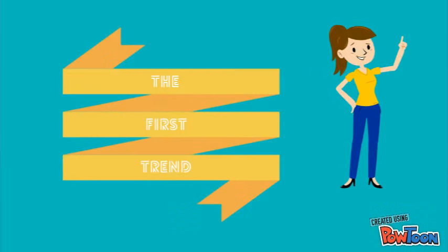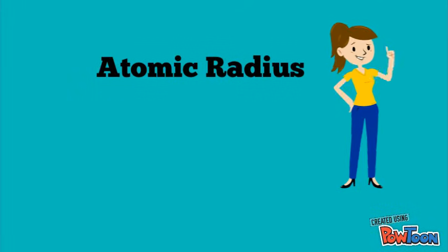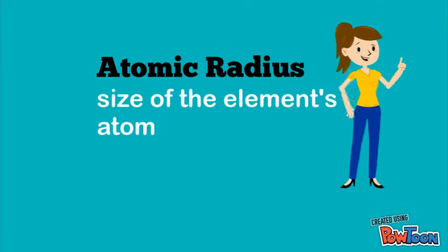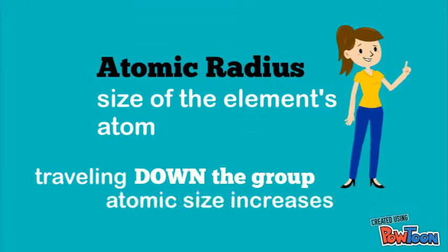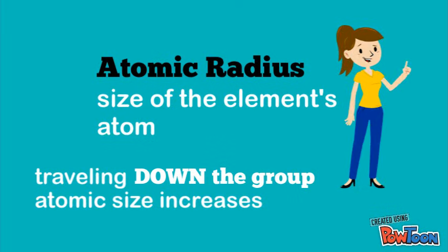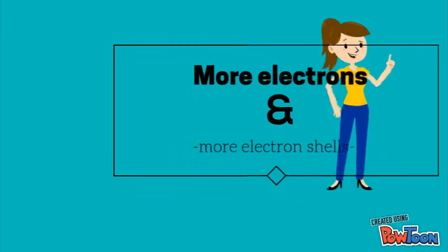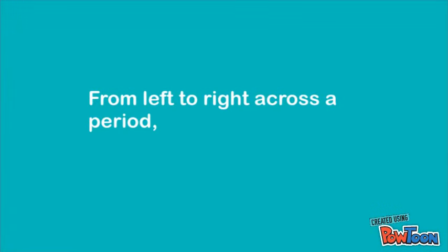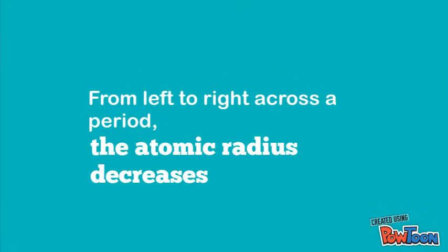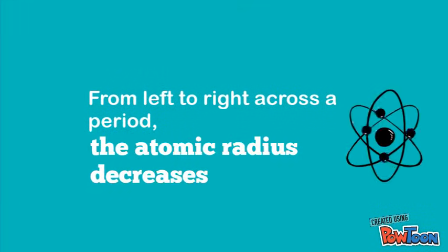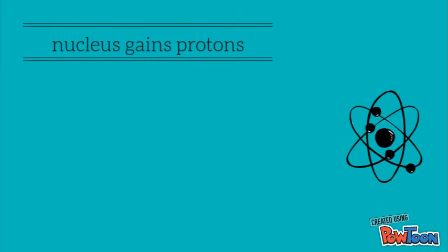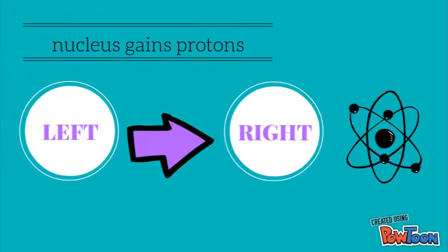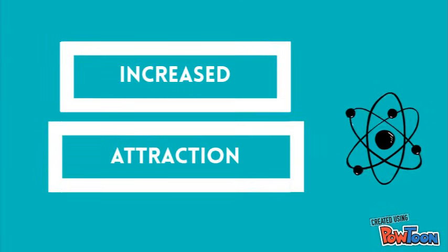The first trend in the periodic table that we're going to talk about is the atomic radius, or size, of the element's atom. As you go down the group, the atomic size of each element increases, because more electrons and electron shells are added, making the atom larger. As you go from left to right across a period, the atomic radius will decrease. This is because the nucleus gains protons from left to right, which increases the attraction of the nucleus and electrons, bringing the particles closer together.